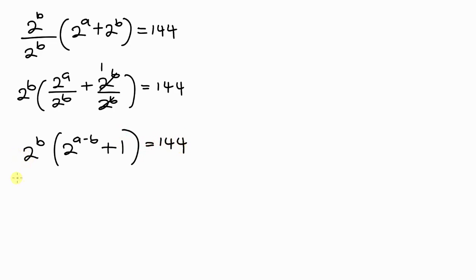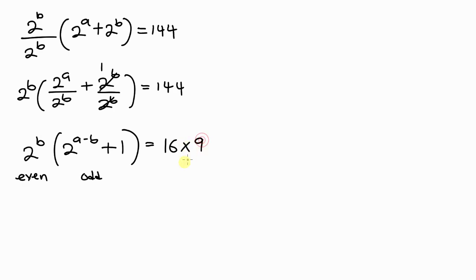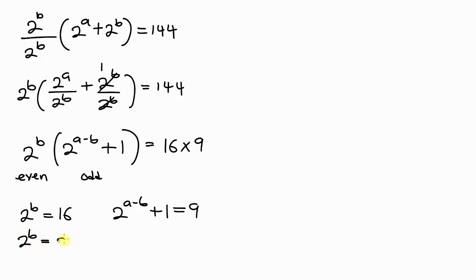Since 2^b is even and 2^(a−b) + 1 is odd, we need an even times an odd factor of 144 — that is 16 × 9. So 2^b = 16 = 2^4, meaning b = 4, and 2^(a−b) + 1 = 9.